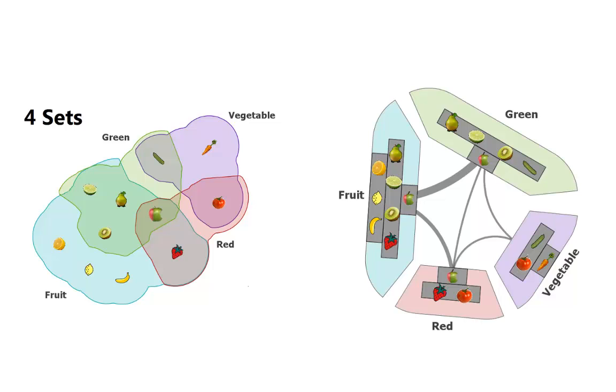The sets are depicted as non-overlapping regions with radial arrangement. The overlaps are depicted as links between these regions. A thick link indicates a large overlap between the respective sets. Overlaps between three or more sets can also be depicted as links of higher order.